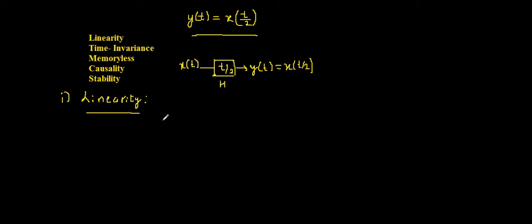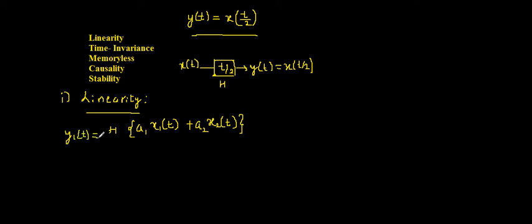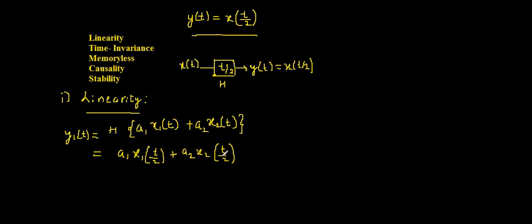To prove linearity we need at least two inputs, x1(t) and x2(t). We scale the first input by a1 and the second by a2, then add them. Giving this combined input to the system with operator h, the output y1(t) is obtained. Since the system replaces t with t/2, we get y1(t) = a1·x1(t/2) + a2·x2(t/2).